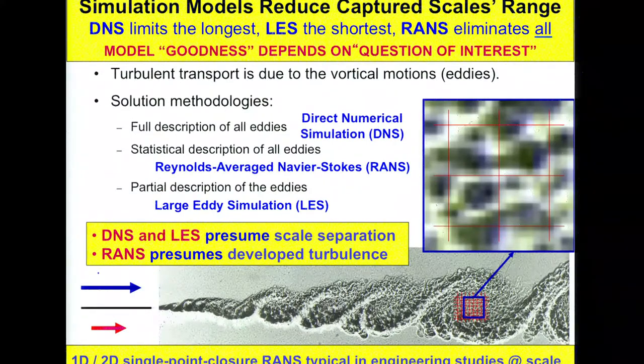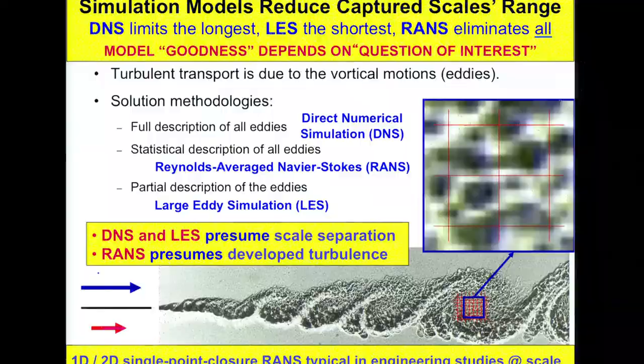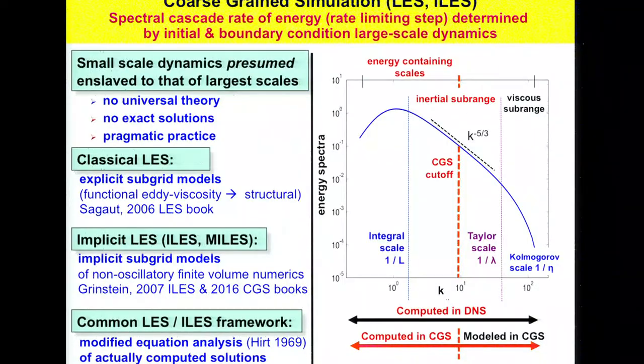Both DNS and LES presume scale separation, while RANS presumes developed turbulence. In a nutshell, there's no universally better method — the appropriate method depends on what you're trying to do.